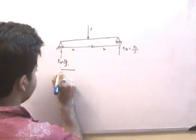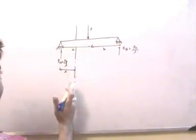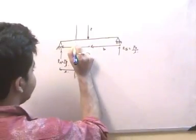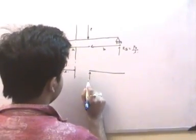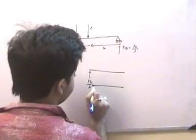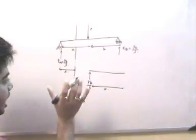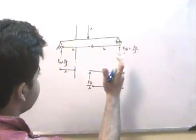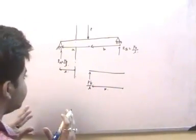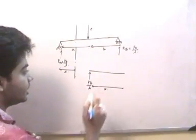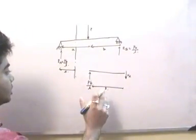Suppose this distance is x from point A, and I want to find the shear force and bending moment at this cross section of the beam. So essentially, if I draw the left portion of this beam as a free body diagram, this reaction is equal to Pb/L, the distance is x, and at this cross section — considering the left portion of the beam — the convention is that shear force Vx is positive if it is in a downward direction. That is, the downward direction is positive for shear force.